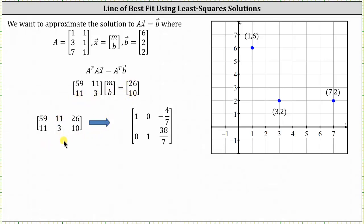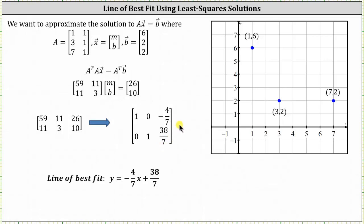Writing the augmented matrix in reduced row echelon form: the first row is 1, 0, negative 4/7, indicating m equals negative 4/7. The second row is 0, 1, 38/7, indicating b equals 38/7. Therefore, the line of best fit is y equals negative 4/7 x plus 38/7.